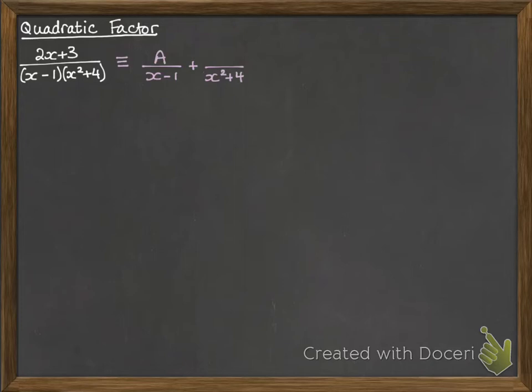Now, the top of the first one is just A as usual, but the top of the quadratic, the fraction that has the quadratic on the bottom, could actually have a linear term on the top. So it could be Bx plus C.